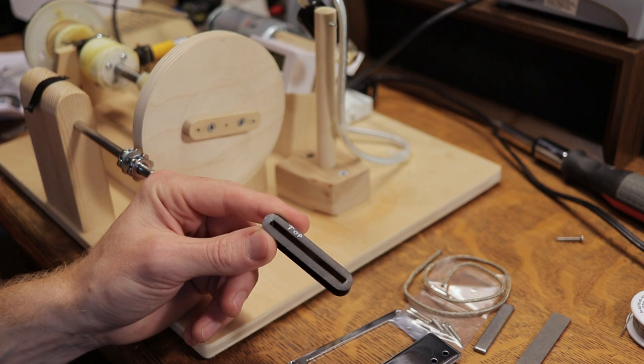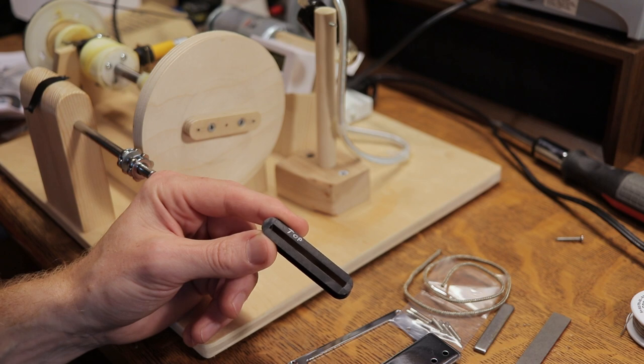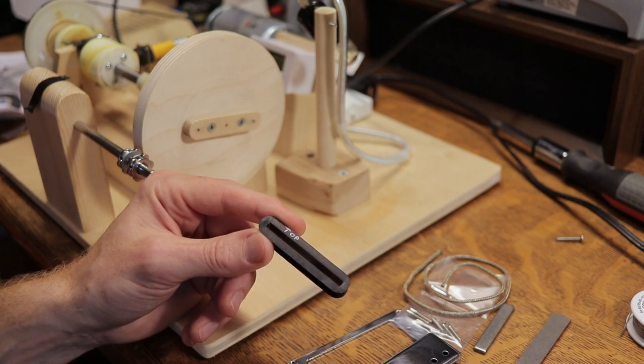Before I mount this up, I'm just going to write 'top' on it so I know which way is the top, which way the pickup is wound, so I can keep both bobbins the same when I combine them into the humbucker pickup.